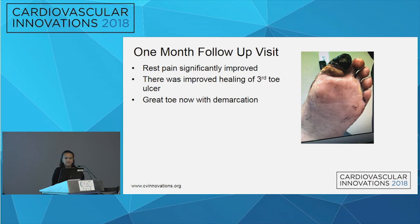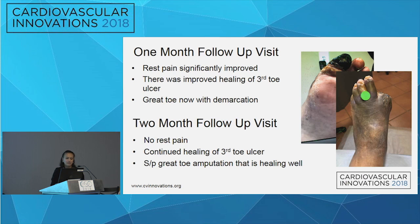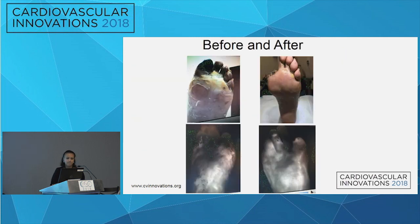At one-month follow-up, his rest pain had significantly improved. He had improved healing of his third toe ulcer, and his great toe now had demarcation. At two months, he had no rest pain, the third toe ulcer was almost completely healed, and his great toe amputation was healing well. Before-and-after pictures show improved foot appearance and increased perfusion — shown in white — to three toes of the foot.